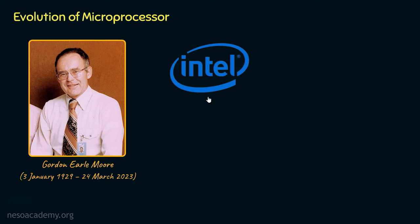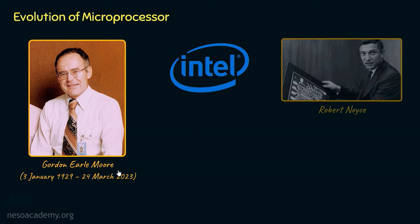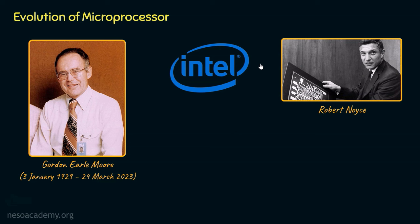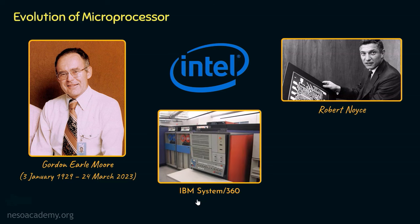Since we will mainly be focusing on Intel's 8085 microprocessor, learning about Intel is a necessity. Intel was co-founded by Gordon Earl Moore and Robert Noyes. Before shifting into the microprocessor business, Intel primarily produced memory chips. Early computers like the IBM System 360 used magnetic core memory as primary RAM and magnetic tapes as secondary storage. Early computers used a combination of discrete components for processing and magnetic core for storage, with relatively slow data transfer between memory and the processing unit.